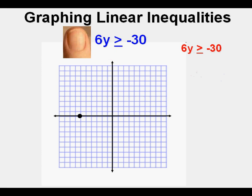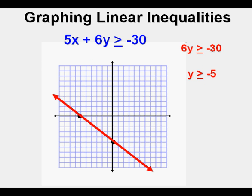We now find the y-intercept by covering the x term, leaving 6y is greater than or equal to negative 30. Dividing both sides by 6 gives y greater than or equal to negative 5. We mark the y-axis at negative 5. Using the x and y intercepts, we draw the line — it's a solid line since the symbol is greater than or equal to.